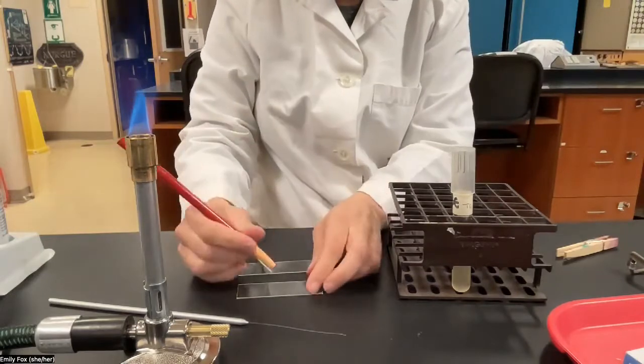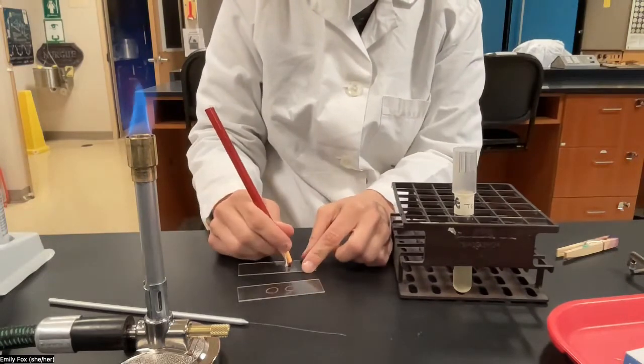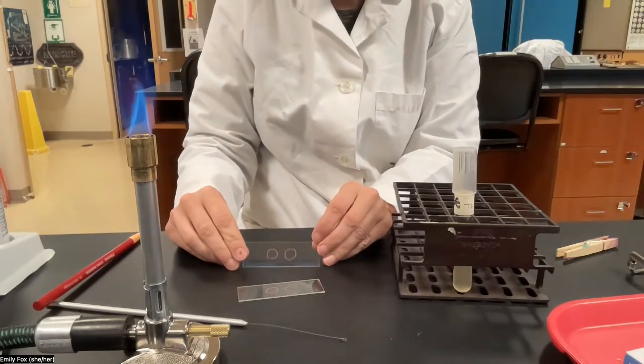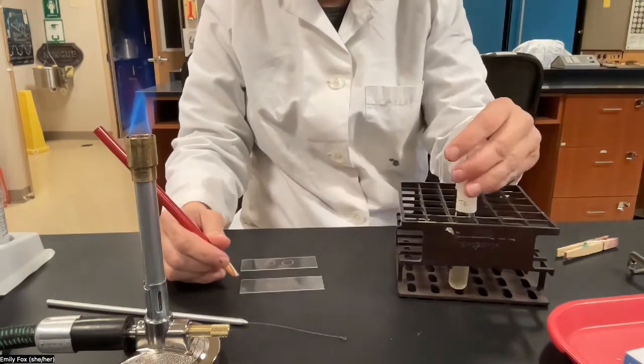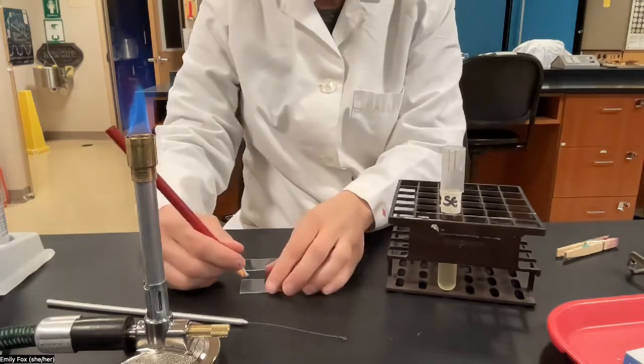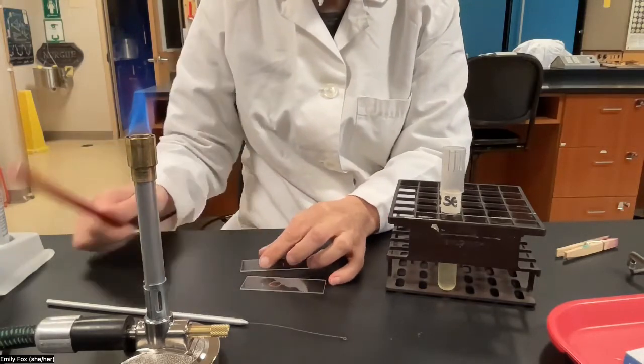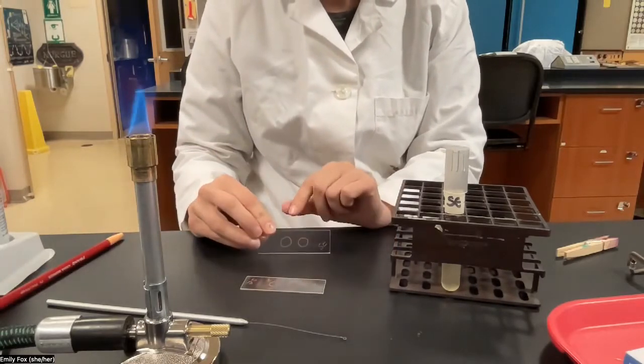Now you're going to take your wax crayon and draw two circles on your slide like this. And then you're going to label your slide with the initials of your bacteria. These are S E. Like so, S E.